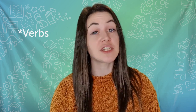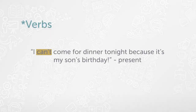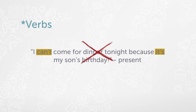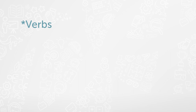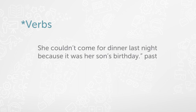It's important that we change the verbs to make it clear that the situation happened in the past, not the present. When Maria said "I can't come for dinner tonight" or "it is my son's birthday," she was speaking in the present. If we repeat what she said the day after, we can't say "it is her son's birthday" because it was yesterday. Since yesterday is in the past, we need past verbs: "she couldn't come for dinner" and "it was her son's birthday." See how the verbs have changed?